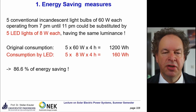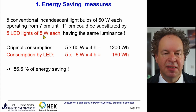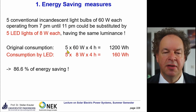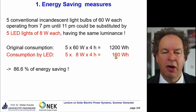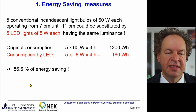An excellent energy-saving measure is to substitute the 60-watt conventional light bulbs with LED bulbs at 8 watts each — not the latest generation, but quite achievable. Instead of 60 watts, we have 8 watts. Multiplying by 5 bulbs over 4 hours of use, we get only 160 watt-hours per day instead of 1,200 watt-hours. That is a saving of 86.6%.